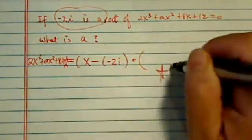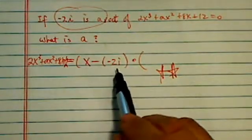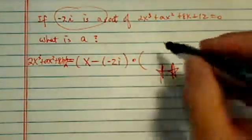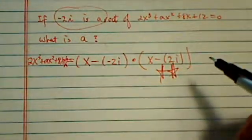Now here is the tricky part. If they give you one complex root, then its conjugate is also a root. It's kind of like implied.